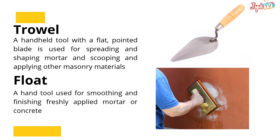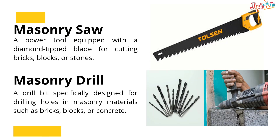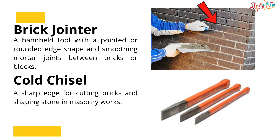Float: A hand tool used for smoothing and finishing freshly applied mortar or concrete. Hook Tool: A tool consisting of a flat square board with a handle underneath. Masonry Hammer: Also known as a brick hammer, has a chisel-shaped edge for splitting bricks and a flat face for striking or setting bricks and stones. Masonry Saw: A power tool equipped with a diamond-tipped blade for cutting bricks, blocks, or stones. Masonry Drill: A drill bit specifically designed for drilling holes in masonry materials such as bricks, blocks, or concrete. Brick Jointer: A handheld tool with a pointed or rounded edge for shaping and smoothing mortar joints between bricks or blocks. Cold Chisel: A sharp edge for cutting bricks and shaping stone in masonry works.